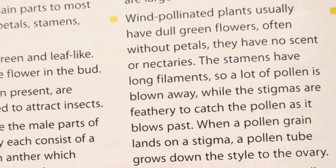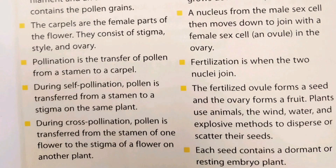Now let's study basic facts. Wind-pollinated plants usually have dull green flowers, often without petals, no scent or nectaries. The stamens have long filaments so a lot of pollen is blown away, while the stigmas are feathery to catch pollen as it blows past. When a pollen grain lands on a stigma, a pollen tube grows down the style to the ovary. A nucleus from the male sex cell moves down to join with the female sex cell in the ovary — this is fertilization. The fertilized ovule forms a seed and the ovary forms a fruit.